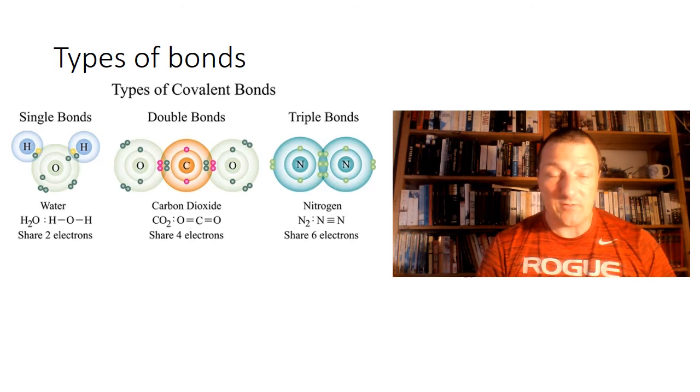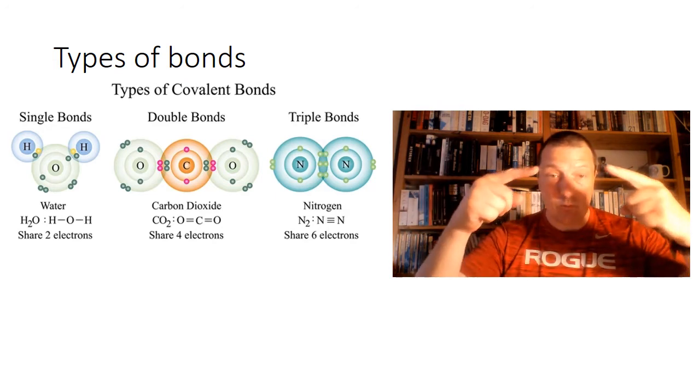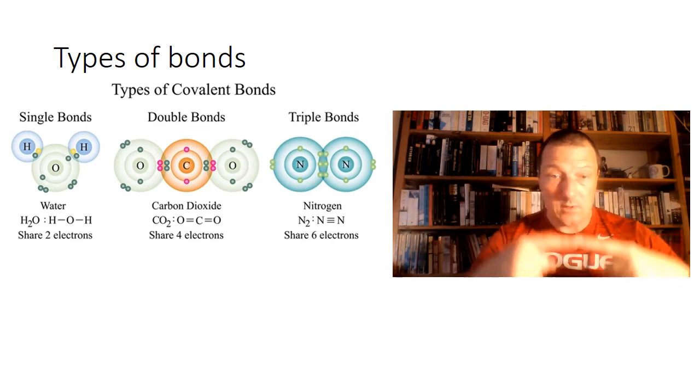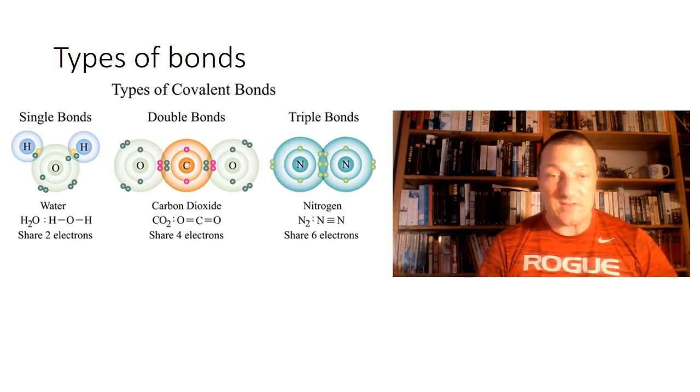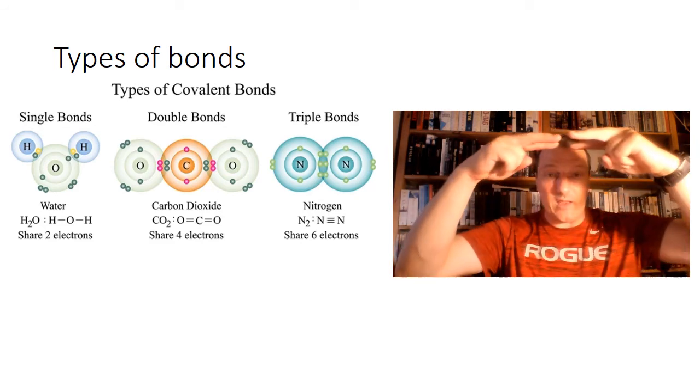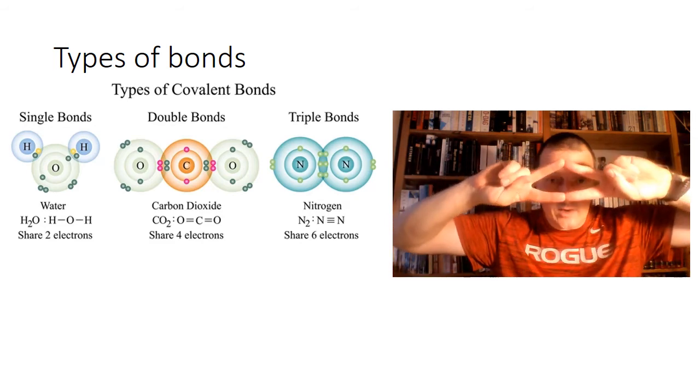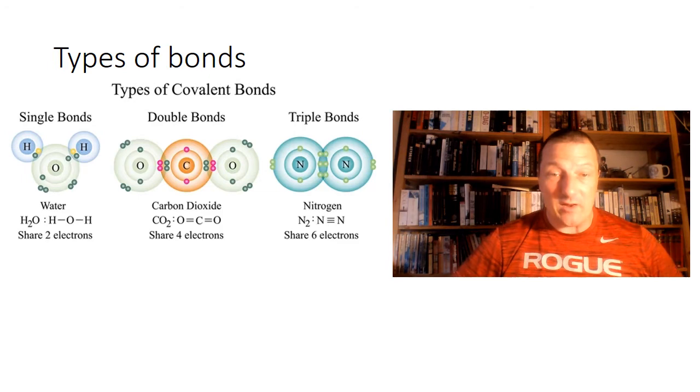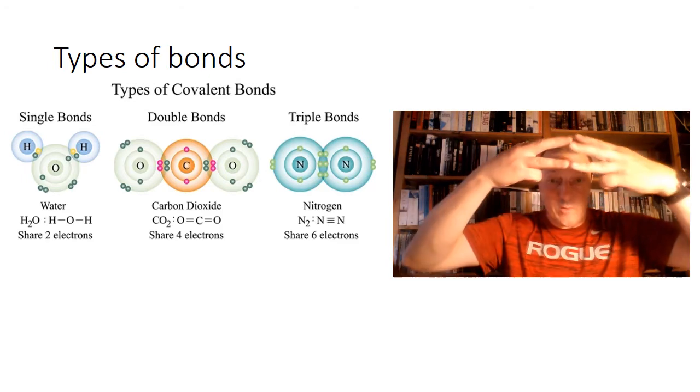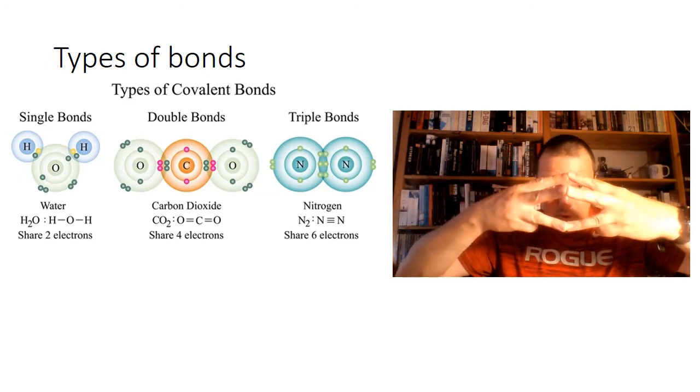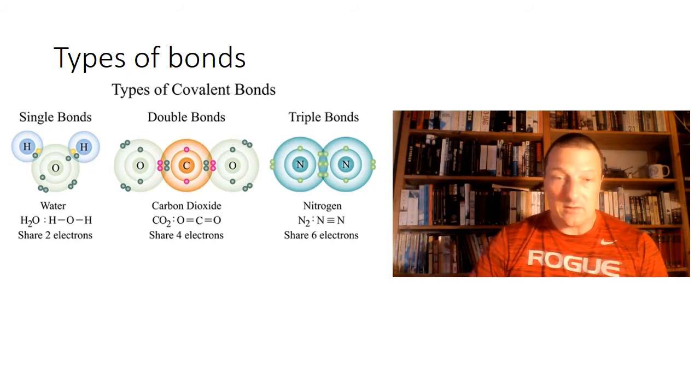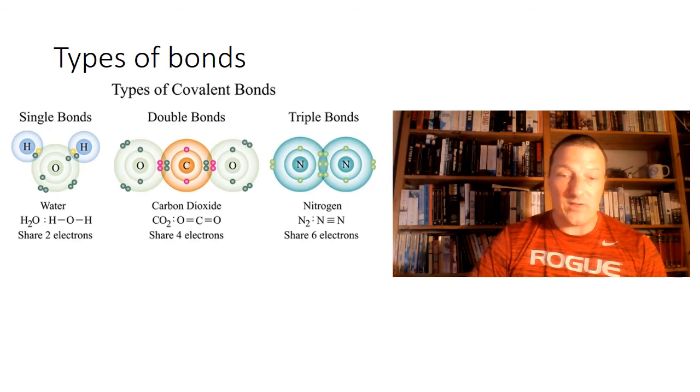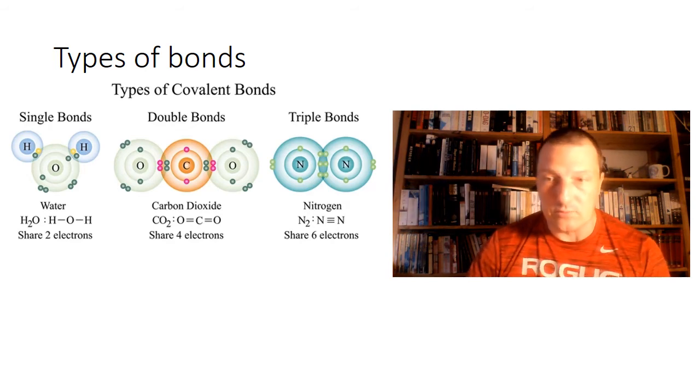Here we see the three different types of covalent bonds. We have in water, where we share one electron. So oxygen shares one with the hydrogen. We have in CO2 where we have a double bond with two electrons shared. And we have in nitrogen N2, where we share three electrons, a triple bond. Each of these give a different chemical structure and decides how hard it is to break this molecule up.